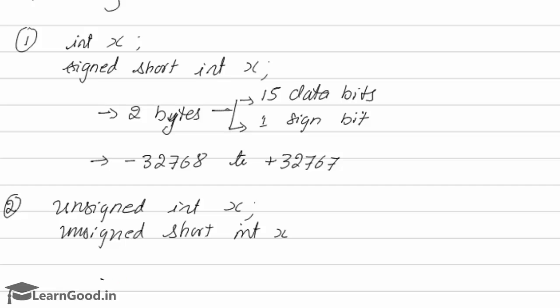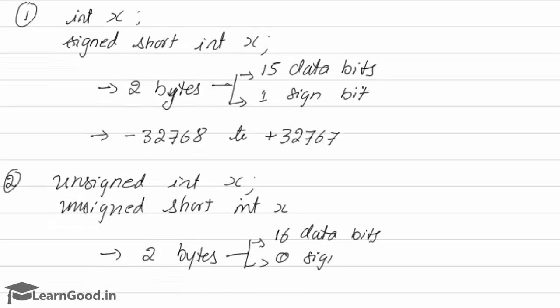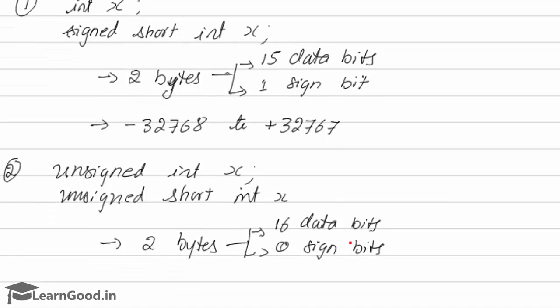So in this case, here again, 2 bytes have been allocated. Of these 2 bytes, all 16 bits will be used as data bits. You won't be having any sign bits. There are 0 sign bits.